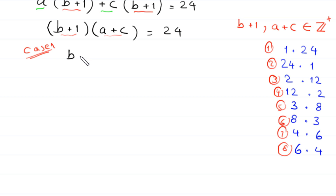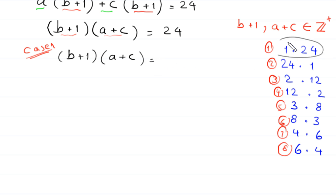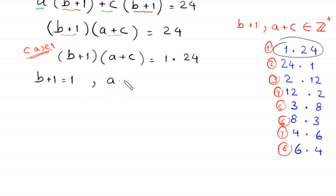In case 1, we set (b + 1)(a + c) = 1×24. So b + 1 = 1 and a + c = 24. From b + 1 = 1, we get b = 0. We recall equation 1.